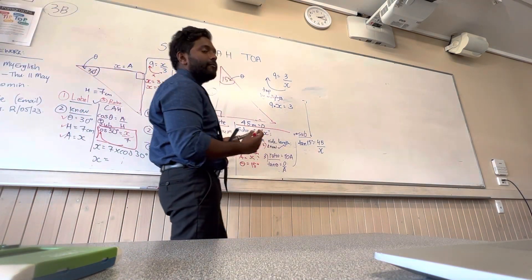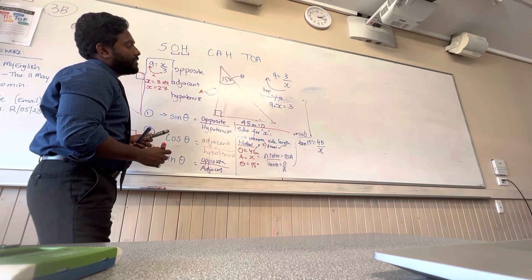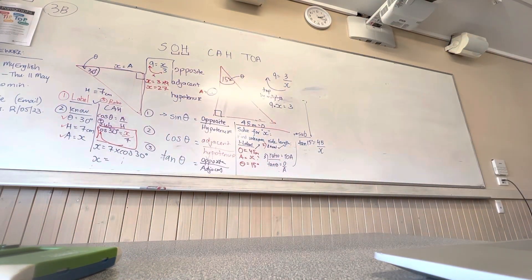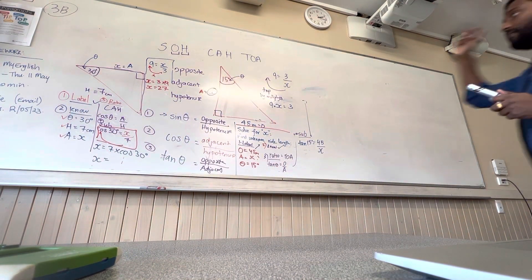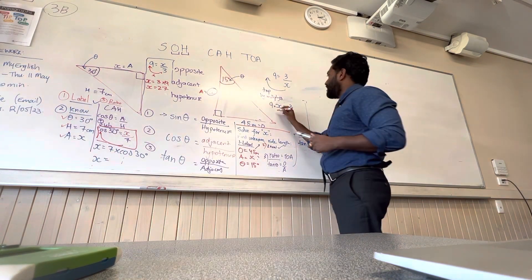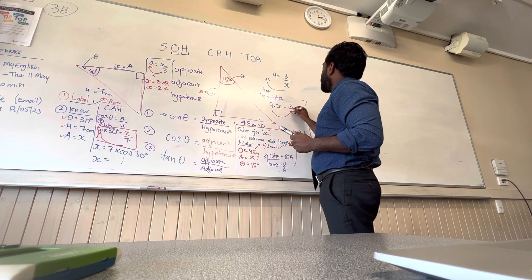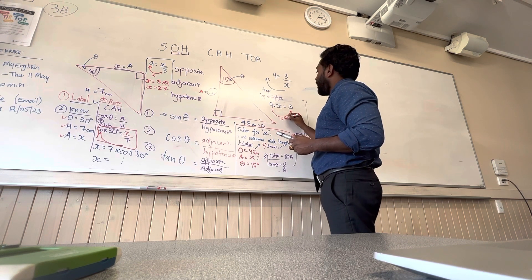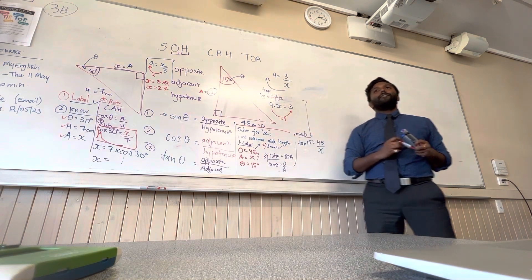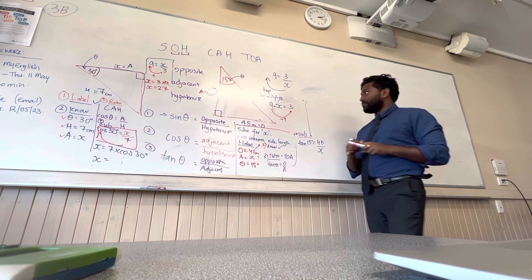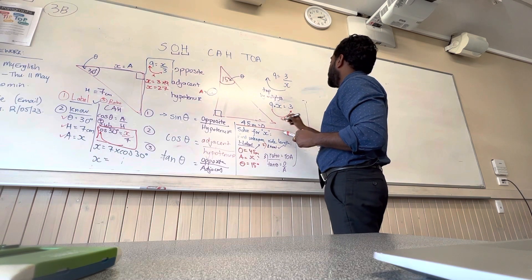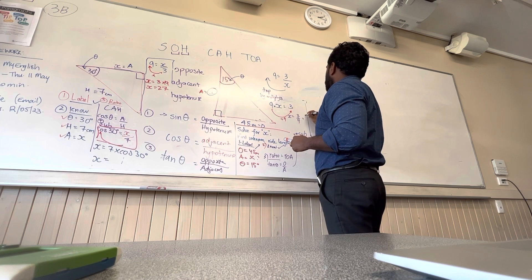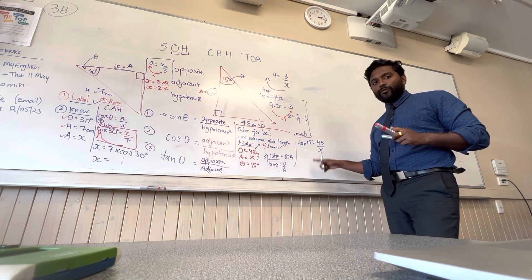How do you solve for x now? What do you need to get rid of? Why do you want to get rid of your 9? Because it's interfering — you want to have x equal to something, so you want to get rid of anything next to that x. So you're going to get rid of that 9, and how do you do it? You divide by 9. Why? Because it's the opposite. So now you're going to have x is equal to 3 over 9, which is one third.